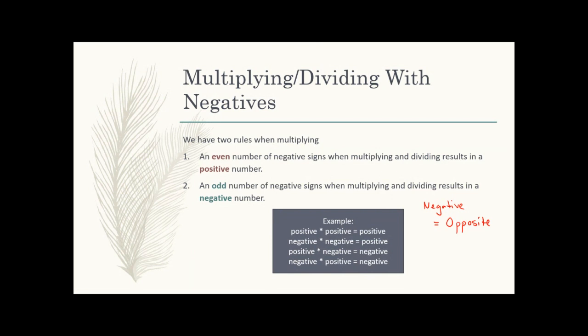When you have an odd number, like a positive times a negative, you have one opposite, so your answer is negative. A negative times a positive is also negative — it doesn't matter the order, you end up with a negative. To summarize: positive times positive equals positive; negative times negative equals positive — you can think of putting those two negatives together to make a plus sign. Positive times negative is negative, and negative times positive is also negative.